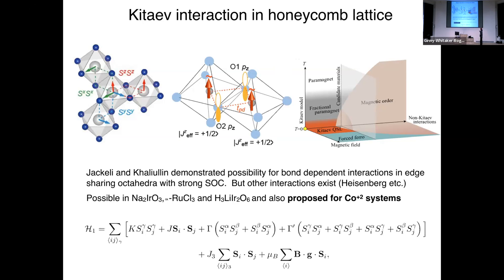When you take real materials and cool them down, they may realize a phase diagram where, although somewhere in parameter space a nice Kitaev spin liquid may exist, all real materials we have enter a long-range magnetically ordered state upon cooling. What is believed in some of these compounds is that when you apply a magnetic field, a Kitaev spin liquid may exist in a finite region of parameter space at finite field — you come out of the magnetically ordered phase and cut through a bit of Kitaev spin liquid.